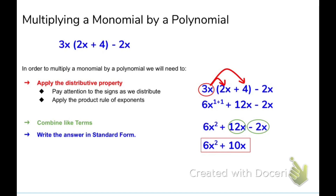Looking at this example, we have 3x, and it's going to multiply each term. So 3 times 2 is 6, and x times x is x squared — that gives us 6x squared. Then 3 times 4 is 12, and we bring along the x, giving 12x. Then we bring down the negative 2x. Now we're ready to combine like terms, and we get 6x squared plus 10x as the simplified answer.